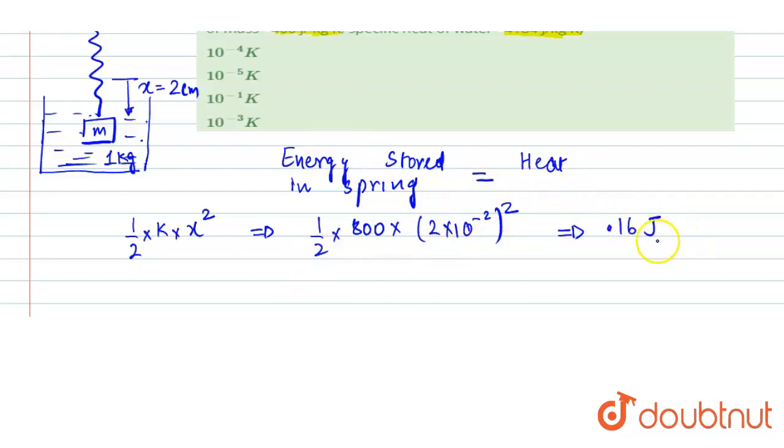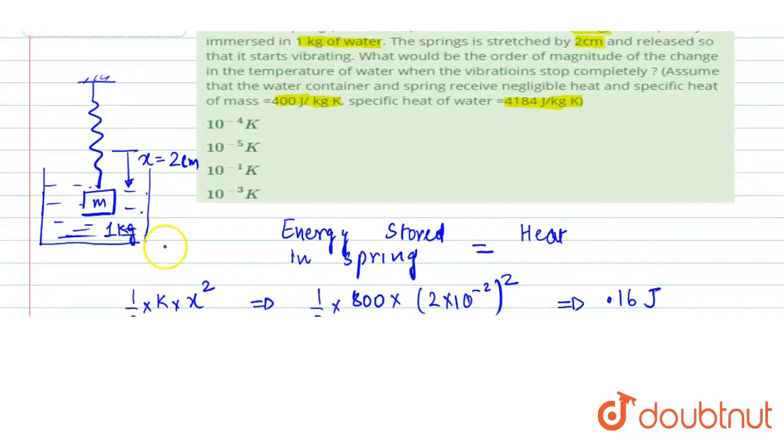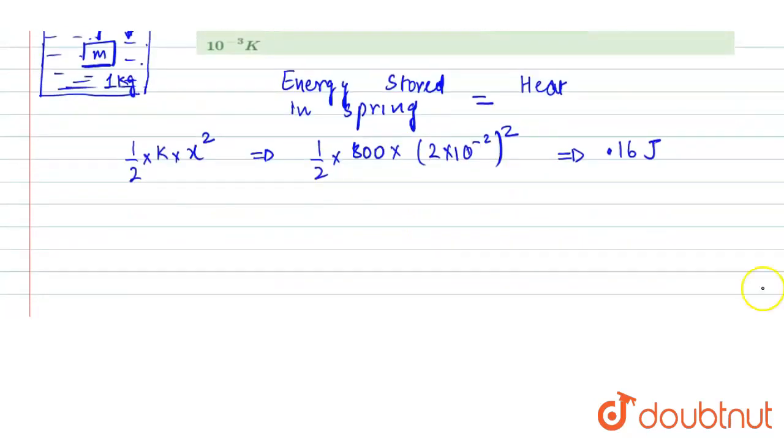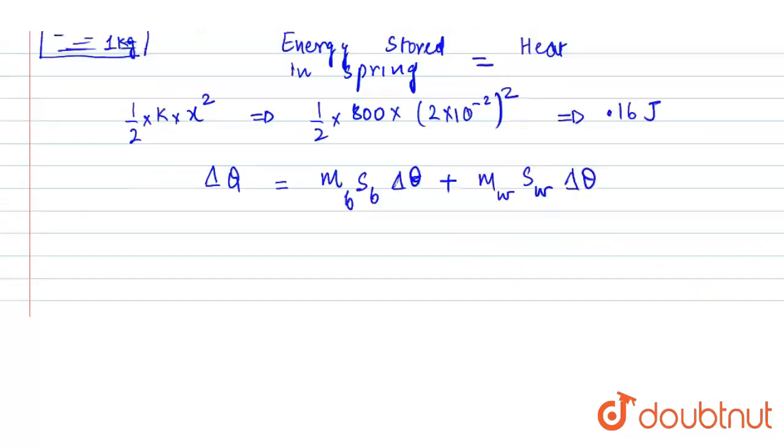Basically we are having 0.16 joules of heat which will be used for rising the temperature of the mass and the water. We know the relation ΔQ = msΔθ. This heat will be mass of the block into specific capacity of the block into Δθ, plus mass of the water into specific capacity of the water into change in temperature of the water.